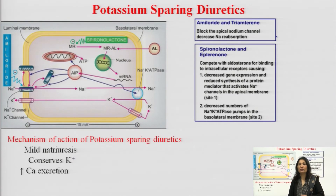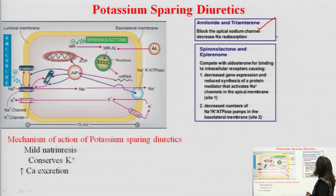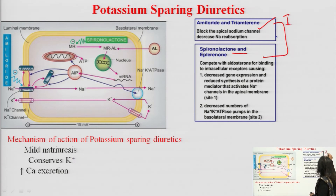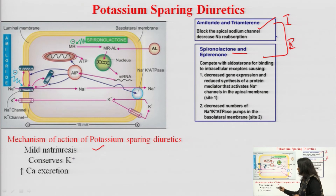The next class is potassium-sparing diuretics — also mild diuretics but very important. These include amiloride and triamterene, which are renal epithelium sodium channel inhibitors, and spironolactone, which is an aldosterone antagonist. Both are mild diuretics causing mild natriuresis, but they conserve potassium and increase excretion of calcium.